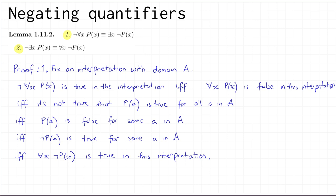That means the formula on the left is true if and only if the formula on the right is true, and therefore they have the same truth value in every interpretation, so they are logically equivalent. Part two you can prove with a similar argument, or deduce it from part one — you can look that up in the online notes. As a way to remember this, an informal slogan version is: 'not for all is the same as exists not.'